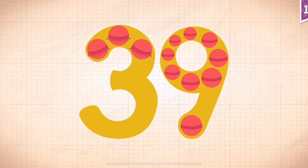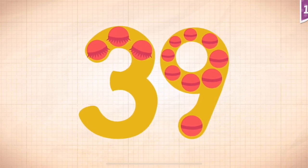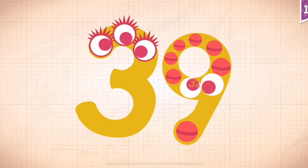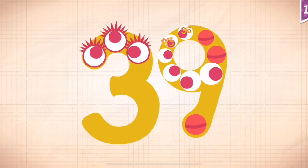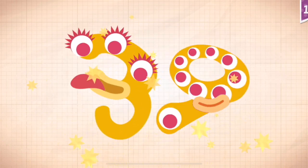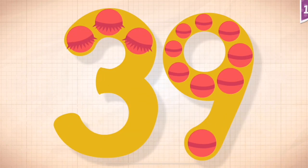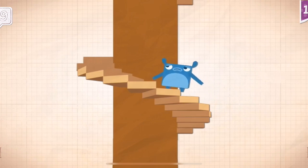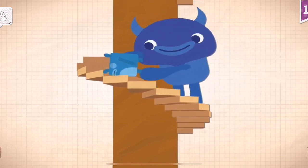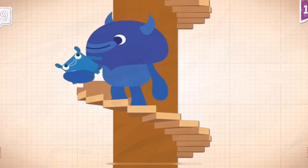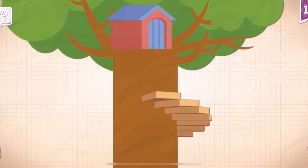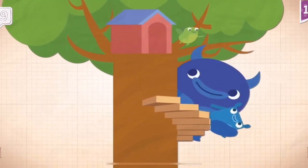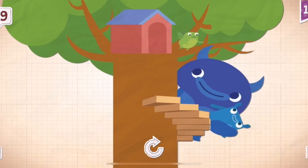Touch the monster's eyes to wake it up. 10, 20, 30, 31, 32, 33, 34, 35, 36, 37, 38. Yay! 39! Big Blue and Little Blue climbed the 39 steps to get to the front door of Sam's house.